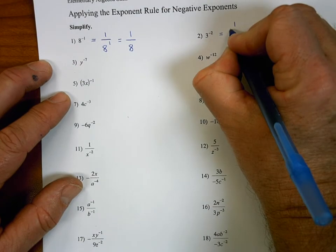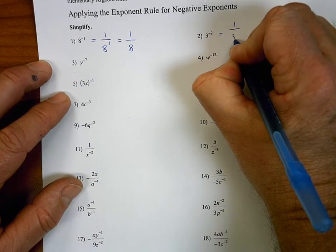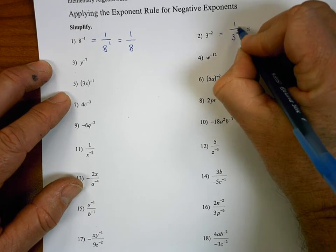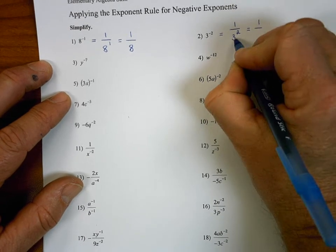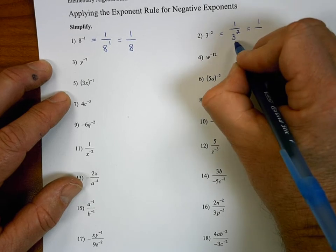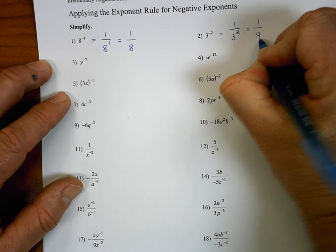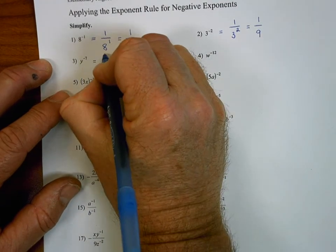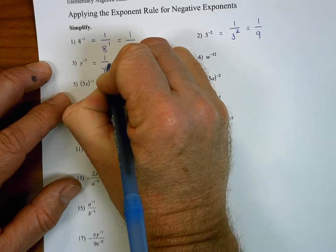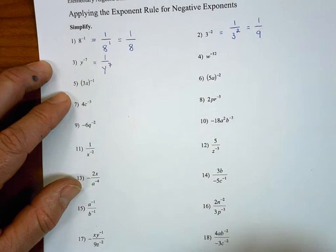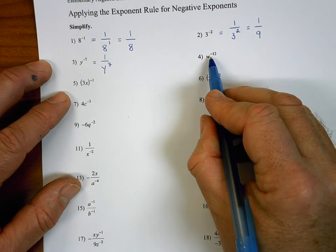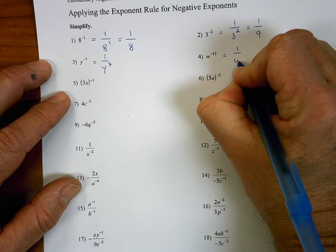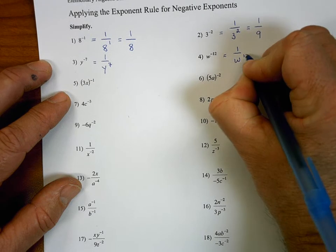For number two, three to the negative two power simplifies to one over three to the second power. Taking it a step further, three to the second power means three times three, so that becomes one ninth. Number three: y to the negative seventh power would simplify to one over y to the seventh. Number four: w to the twelfth power simplifies to one over w to the twelfth power.